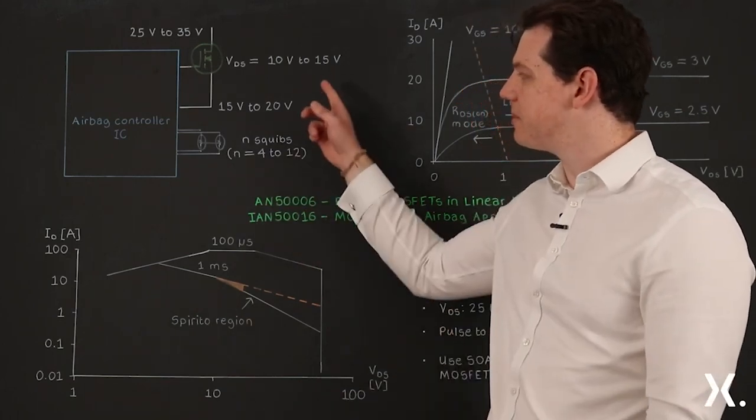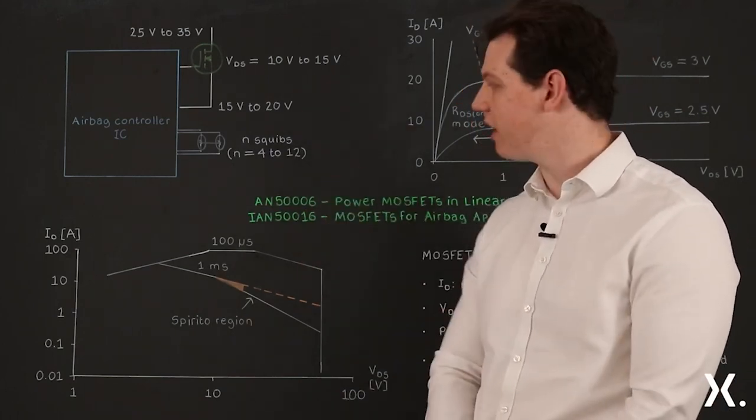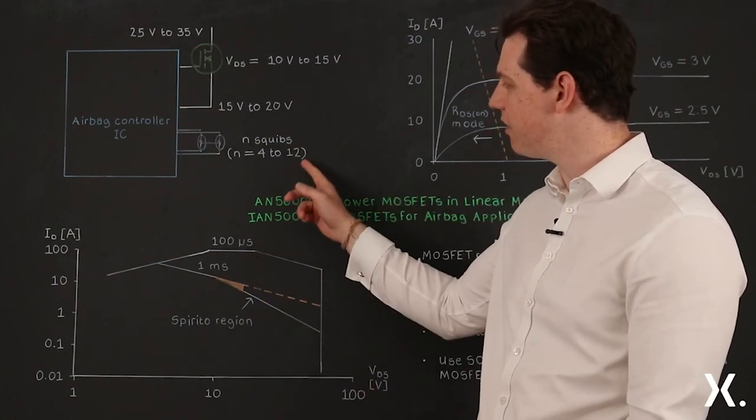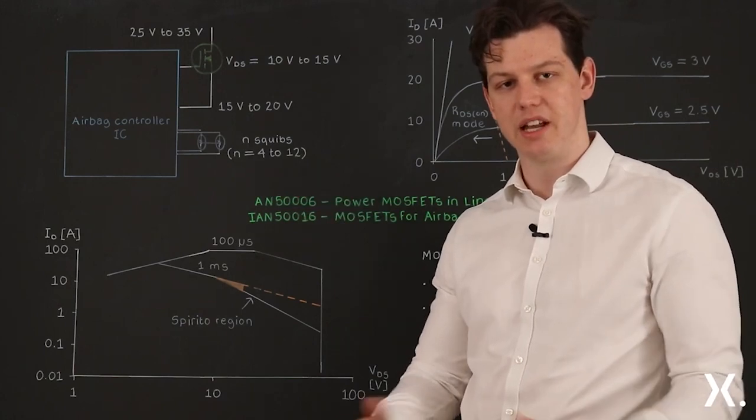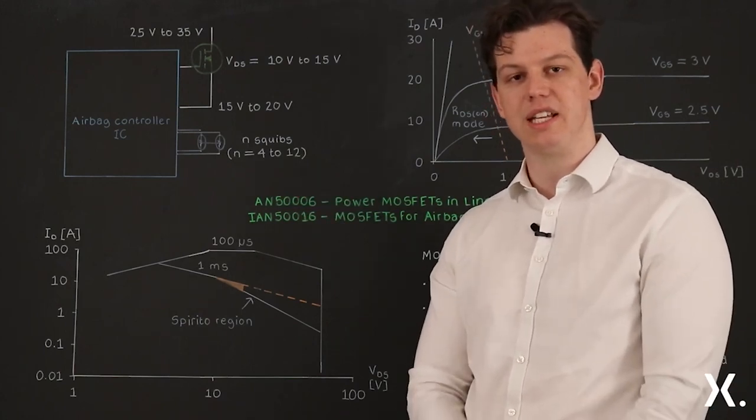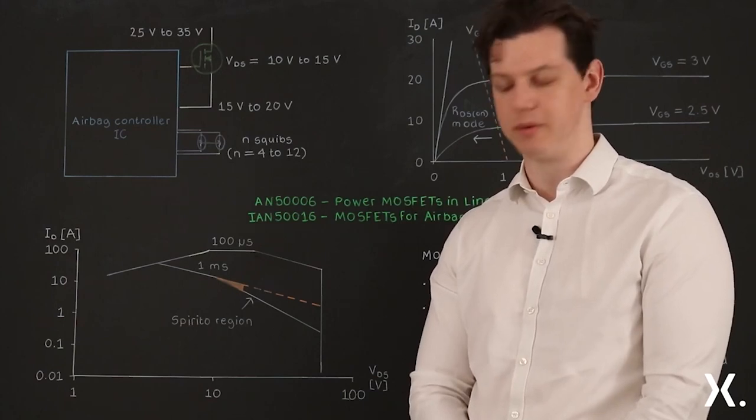The MOSFET needs to be able to handle a pulse of current proportional to the number of squibs controlled by the IC. It needs to be able to handle this large pulse current and because of this it is deliberately used in linear mode.